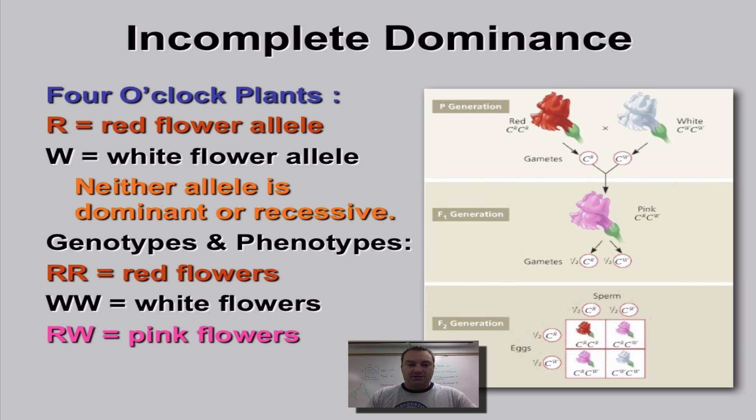In incomplete dominance, you basically have a blend of the two alleles because neither allele is dominant nor is it recessive. So in the heterozygous, you have the two blend together. A perfect example is a four o'clock plant. Four o'clock are plants whose flowers will typically open and bloom right around four o'clock p.m., and they come in mainly two colors, red and white.